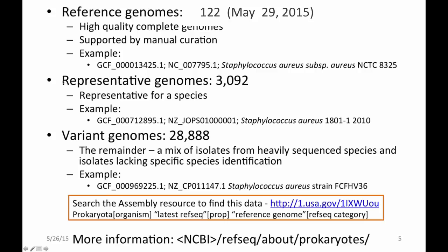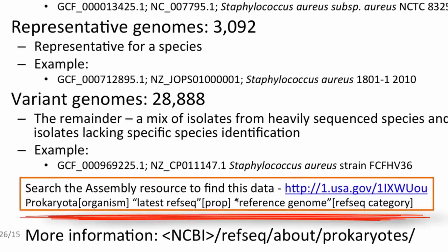We also have a category called representative genomes, where we're trying to select a representative per species. Most of these representatives are high-quality complete genomes, but some are draft — we're selecting the best genome available at this point in time. These are subject to change over time as we get more genome sequencing data. For lack of a better word, we're currently calling the remainder our variant genomes. The majority of these represent bacterial species for which thousands of sequences have been submitted, such as thousands of E. coli or Salmonella genome submissions. You can find information about these categories by searching our assembly resource.